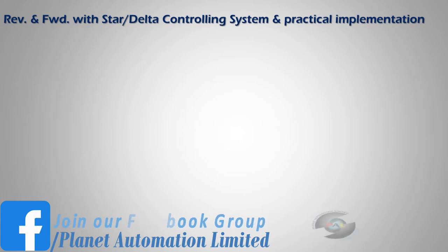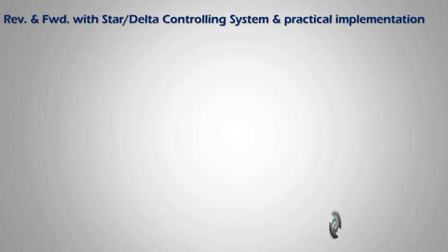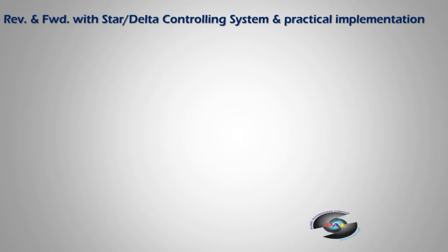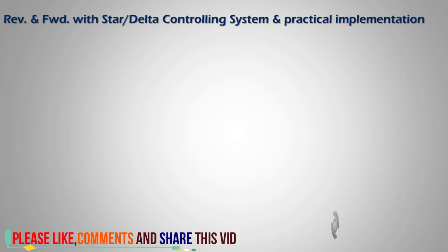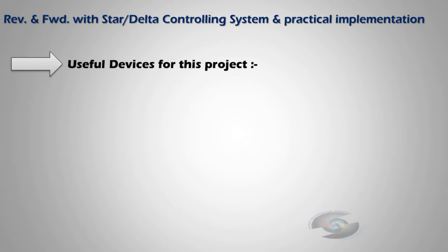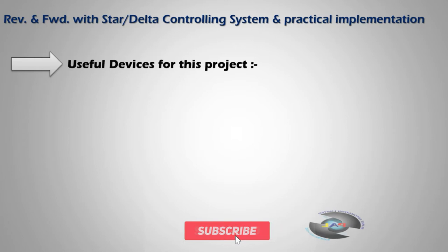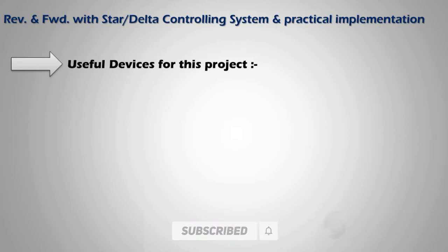Reverse and forward with star-delta — reverse and forward are two types of operations in a single field. This is very important in any kind of industry when you operate any kind of induction motor. Let's start — please watch this video. I hope you guys get some knowledge about this topic. First I'll describe the connection diagram, what is the controlling circuit, what are the power diagrams step-by-step, and how many devices are used in this project.